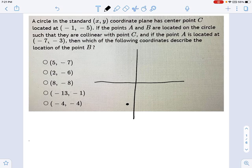If the points A and B are located on the circle such that they are collinear with point C, and okay, that's a word salad, and the point A is located at negative 7. That's information I can use right here. A is located right here at negative 7, negative 3.